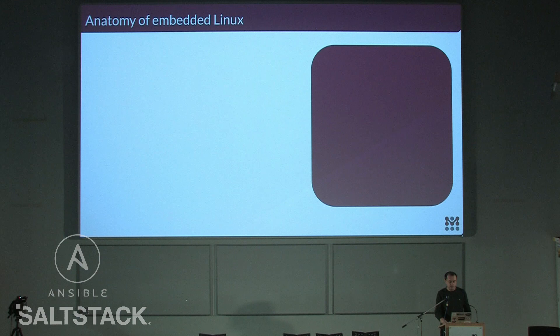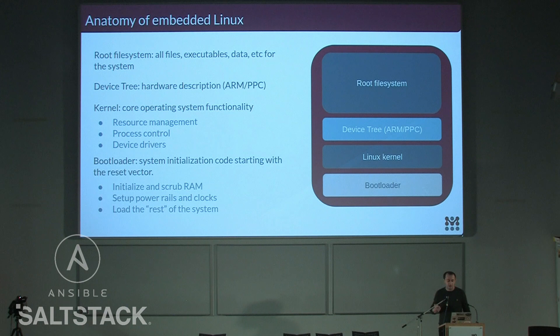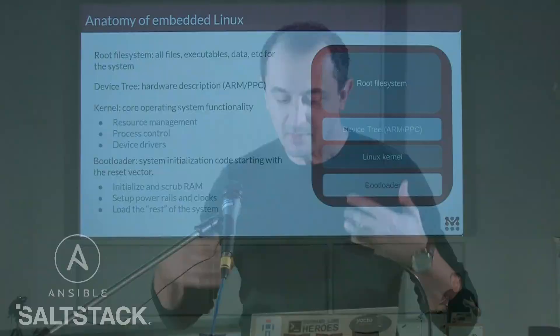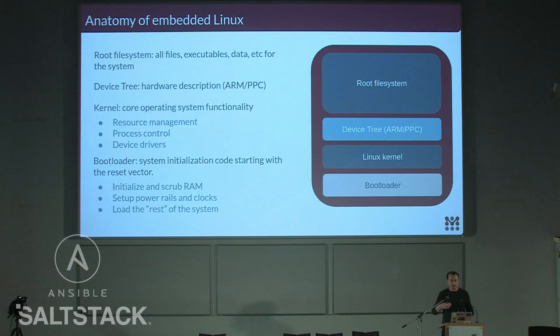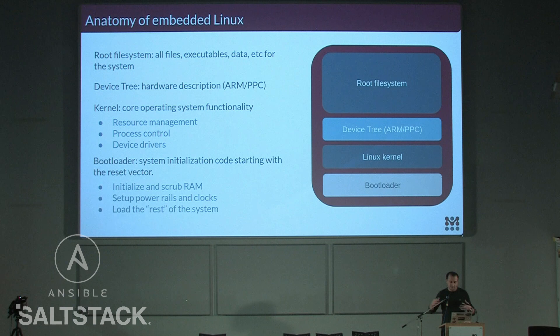I wanted to dig deeper into the anatomy of the embedded Linux device. An embedded Linux device is not special in any way — it's a Linux device. There is a bootloader, there is a Linux kernel, and then you have the root file system where your applications and system binaries live. The one thing causing a lot of problems, making this area unique, is the dominance of ARM processors and the lack of standardization in ARM. On ARM you use something called a device tree, which is the equivalent of BIOS — it's a hardware description file that describes what's connected where and what drivers to load in the Linux kernel.